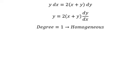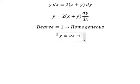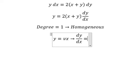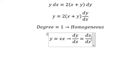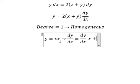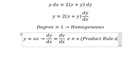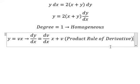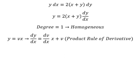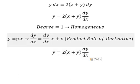I will put y equals vx. If I do the first derivative for both sides, we have dy over dx. The first derivative of v gives dv over dx multiplied by x, and then the first derivative of x gives number one, so we just have v. This is the product rule of derivatives.